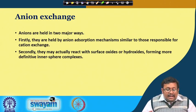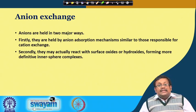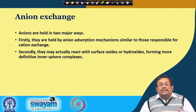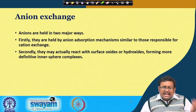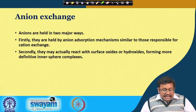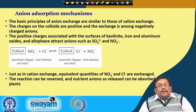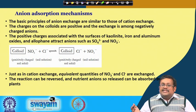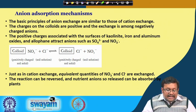Anion exchange is the ability of the soil to exchange anions from its surrounding medium. Anions are held in two major ways: first, by anion adsorption mechanisms similar to those responsible for cation exchange; second, they may actually react with surface oxides or hydroxides forming inner sphere complexes. The basic principle of anion exchange is similar to cation exchange — the charge on the colloids is positive and the exchange is among negatively charged anions. The positive charge develops due to pH-dependent charge and is associated with the surface of kaolinite, iron and aluminum oxides, and allophane, attracting anions such as sulfate and nitrate.